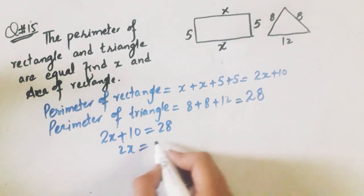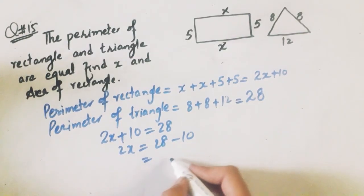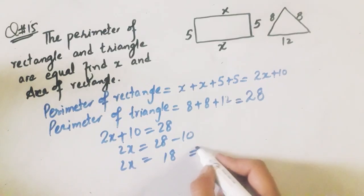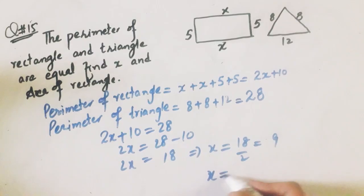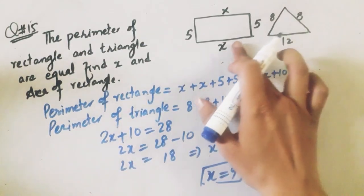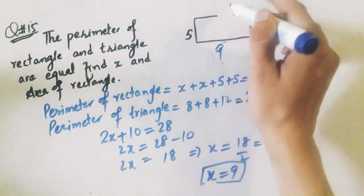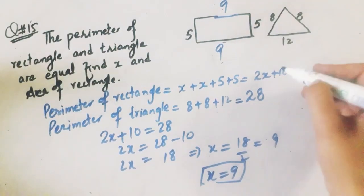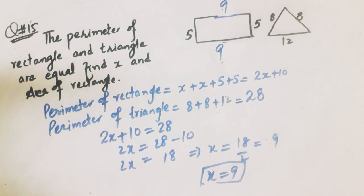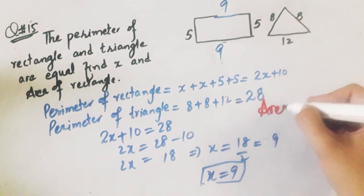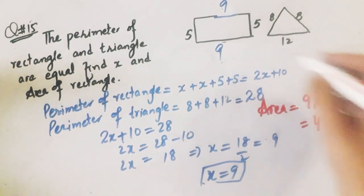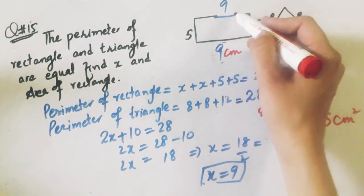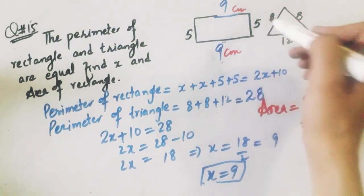Since both perimeters are equal: 2x plus 10 is equal to 28, so 2x is equal to 28 minus 10, which is 18, which implies x is equal to 18 divided by 2, so x equals 9. Now with x equal to 9, you have to find the area. Area of rectangle is equal to 9 multiply 5, which is 45 centimeter square.